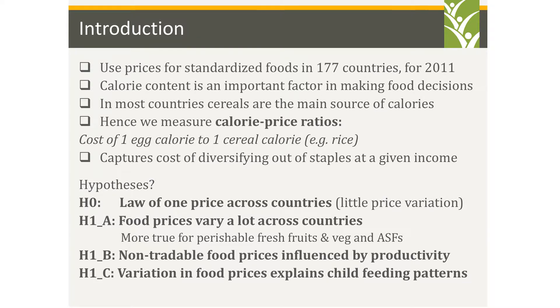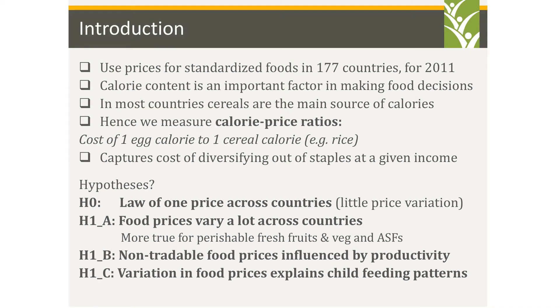In this paper we use prices for standardized foods in 177 countries. We argue from a theoretical point of view that calorie content is a very important factor in motivating food decisions. In rich countries, calorie content matters, but in poor countries facing famine conditions, people will eat the cheapest source of calories. When income goes up, they start diversifying and buying more expensive calories. We focus on cereals as the numeraire because in most countries cereals are the main source of calories. What we construct are calorie price ratios — the cost of one calorie from a given food relative to one cereal calorie.